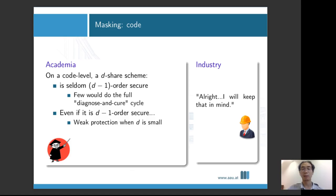On the code level, that means if you've got D share schemes, which in theory can be D minus one order secure, in practice it's seldom D minus one order secure. It's still possible to do it that way, but then you have to go through the full diagnose and cure cycle, which I can guarantee is quite devastating and time consuming. Even if you finish the whole cycle, if your D is small, it's still quite weak protection after all. Our industry engineer says, that's far from ideal, but I'll keep that in mind.